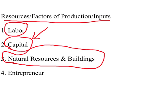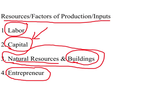The third resource required to produce goods and services is natural resources, which would include land, water, and air, along with what comes with these — fish, oil deposits, bauxite deposits, and so on. Along with natural resources we include buildings, which is a man-made resource. The fourth factor of production is the entrepreneur. By entrepreneur we mean the owner of a business, or a person who makes and is responsible for decision making in a business environment — so owners or managers of businesses are called entrepreneurs.